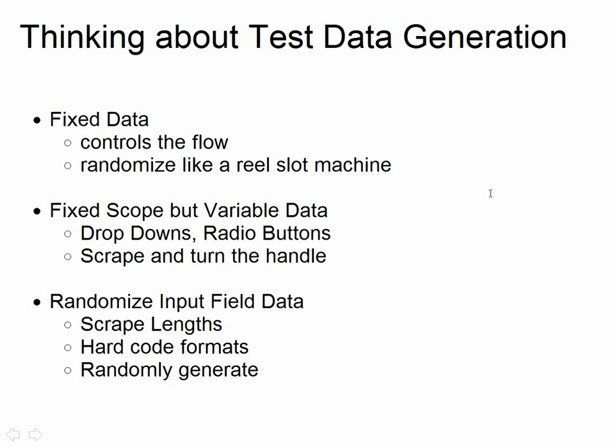Thinking about the test data: we've got some fixed data that controls the flow — the countries in the drop-downs for registration, different age ranges that control the workflow. We can randomise this using a slot machine metaphor: a big list of data in different reels, you pull the handle, the reels spin to get a randomised start point with lots of different combinations lined up. Then the test just runs through those. We don't necessarily know what they are between runs, so we scrape them off the site. We have input field data which, so long as it matches a certain format, we randomly generate each time. If you've got 200 countries to register from, that's an awful lot of random data combinations. And if it takes six hours to run, then it takes six hours — you run it overnight or on a different machine. If it finds any problems, you investigate them.